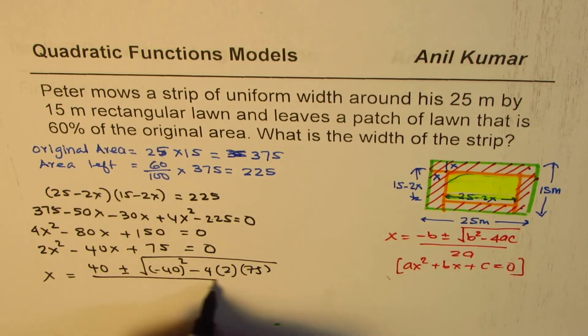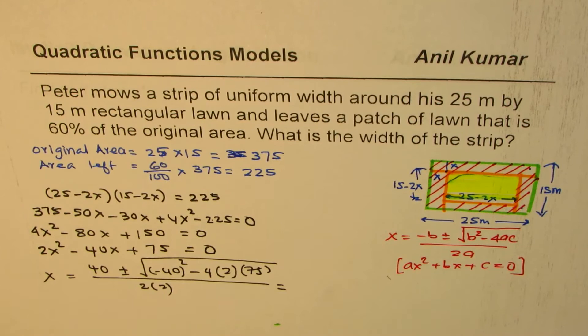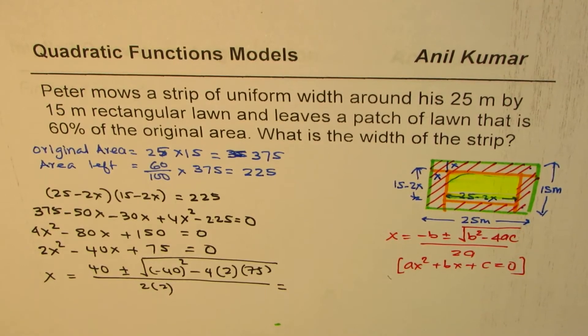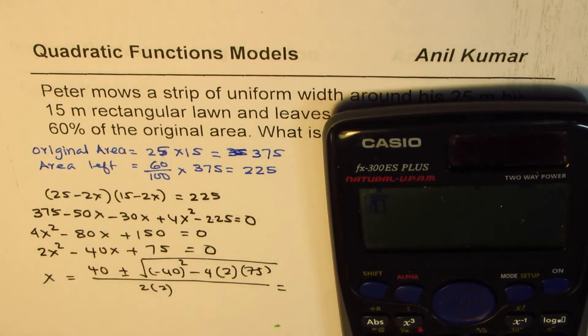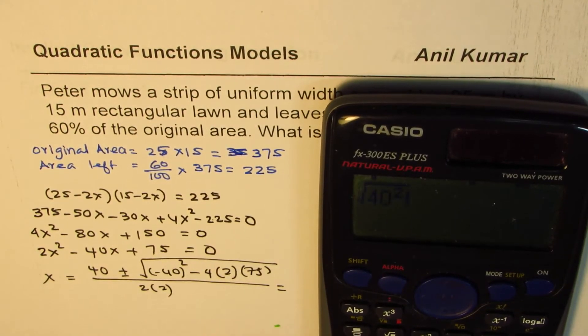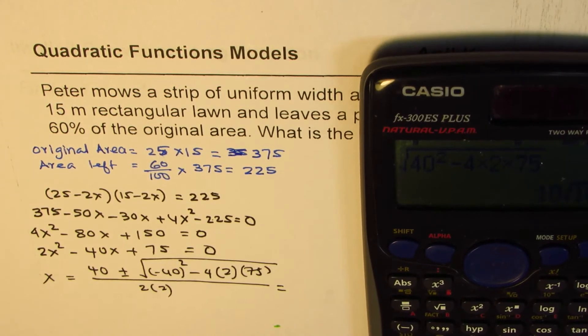We can first find what is within the square root, which is square root of 40² - 4 times 2 times 75, which equals 10√10. We're working in decimal values, so 10√10.